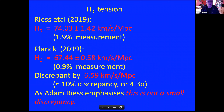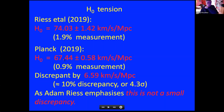Here are some numbers for the H0 tension. Adam Rees's value from the SHOES collaboration is 74 plus or minus 1.4 km/s/Mpc. The Planck value is 67.4 plus or minus 0.6. These are discrepant by 6.6 km/s/Mpc — a discrepancy at the 10% level — for measurements where the Cepheid distance scale measurement is supposedly accurate to 2%. It's not a small discrepancy given the errors.